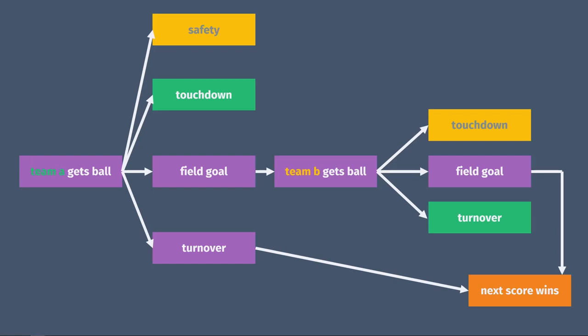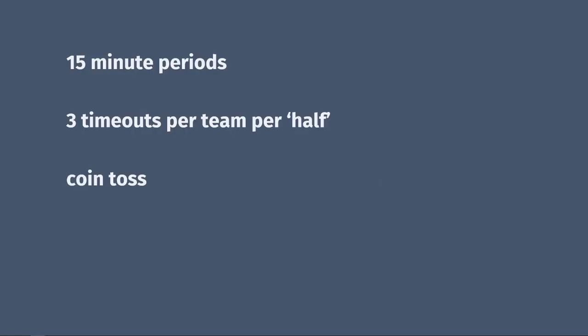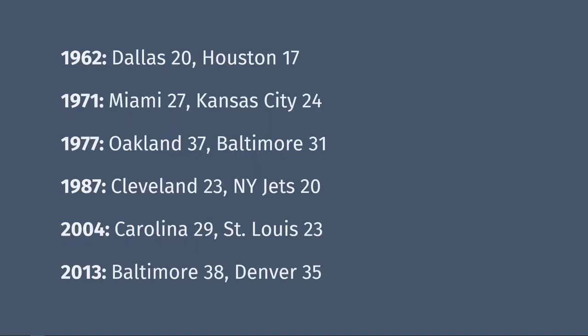Unlike in the regular season where the game would just be over. If somehow nobody manages to score through four overtime quarters, then they'll have another coin toss to start the fifth overtime period. This has never happened though. There have only been six games that have made it to double overtime with the longest lasting seven minutes and 40 seconds into that second OT period.